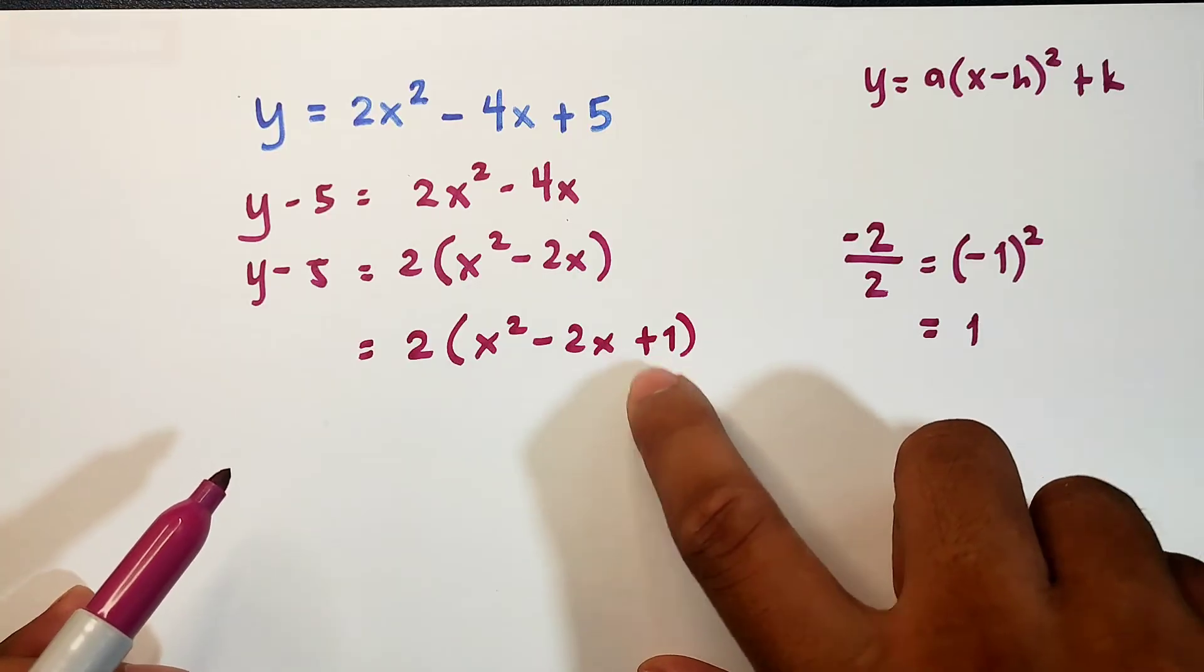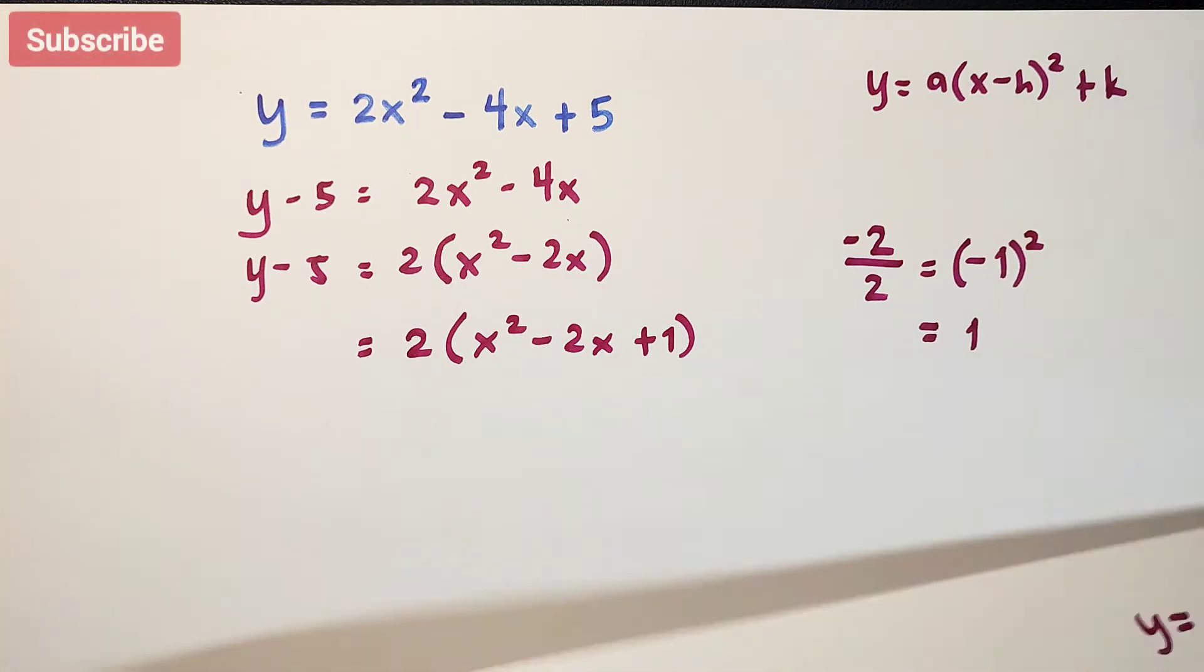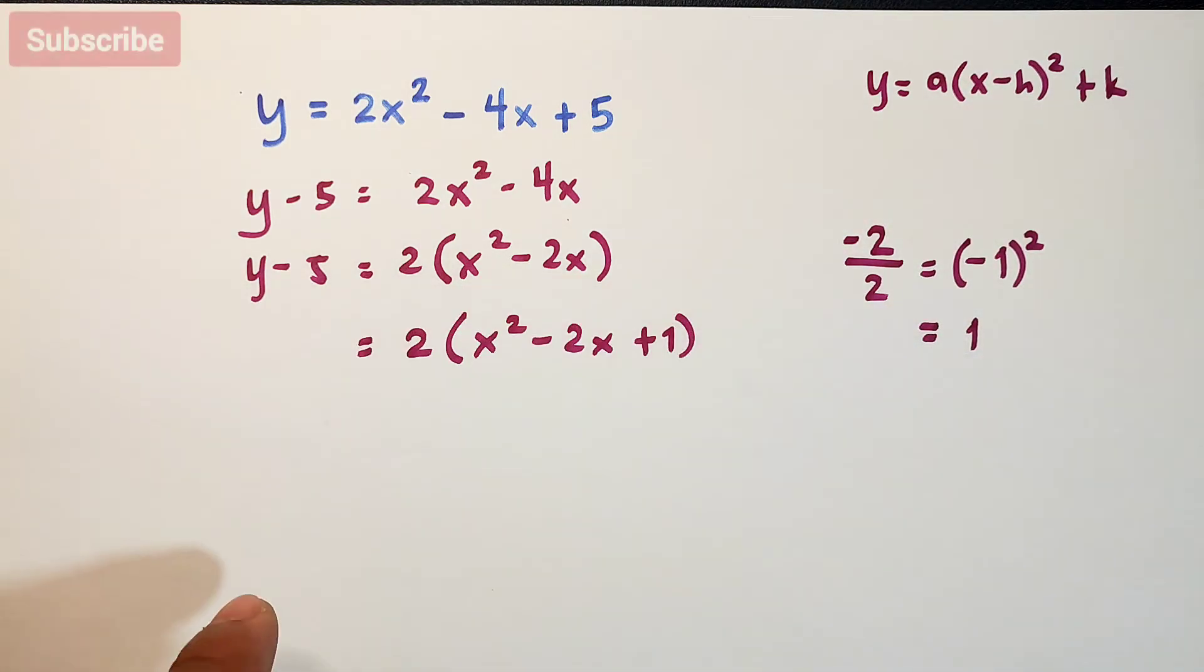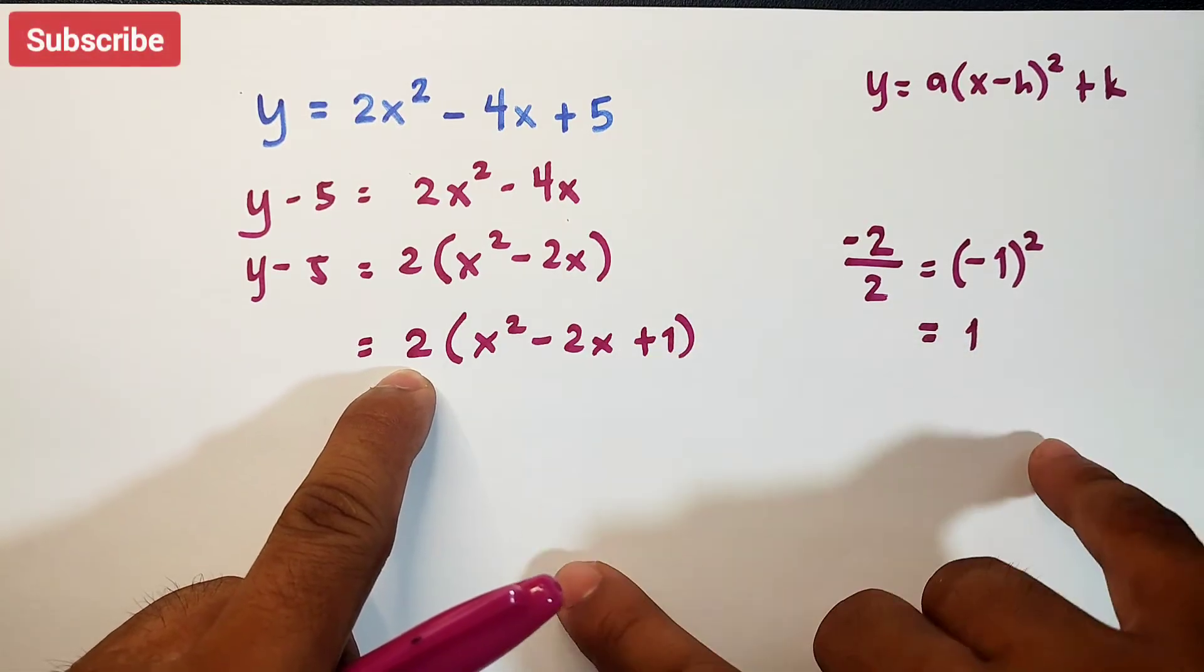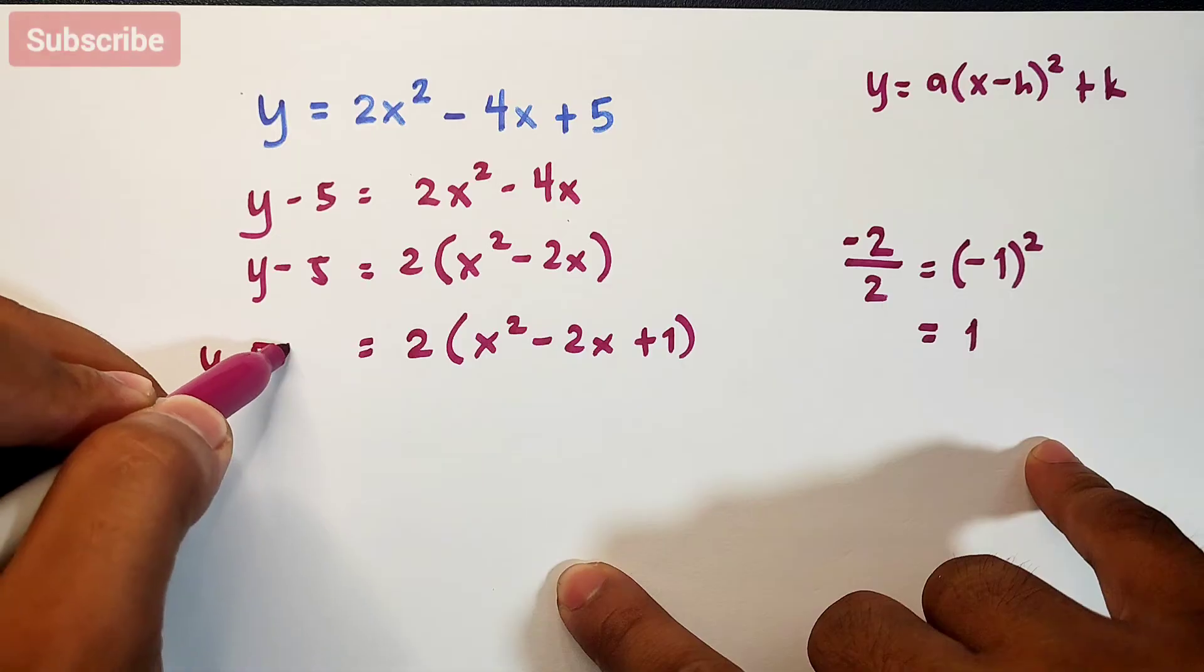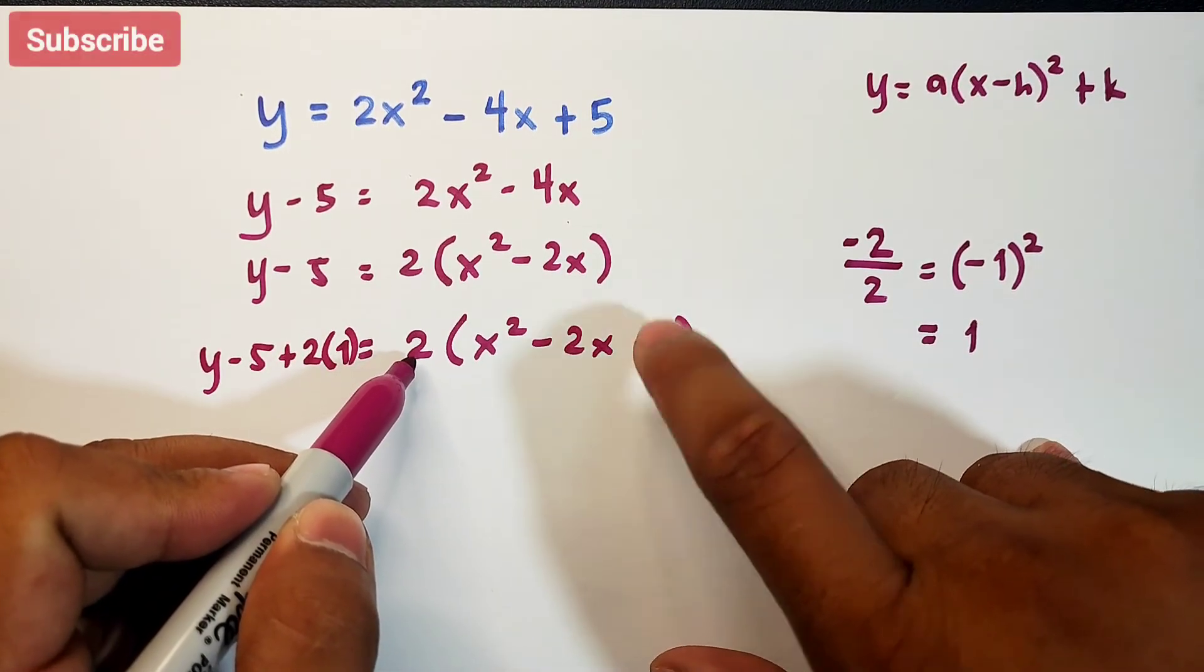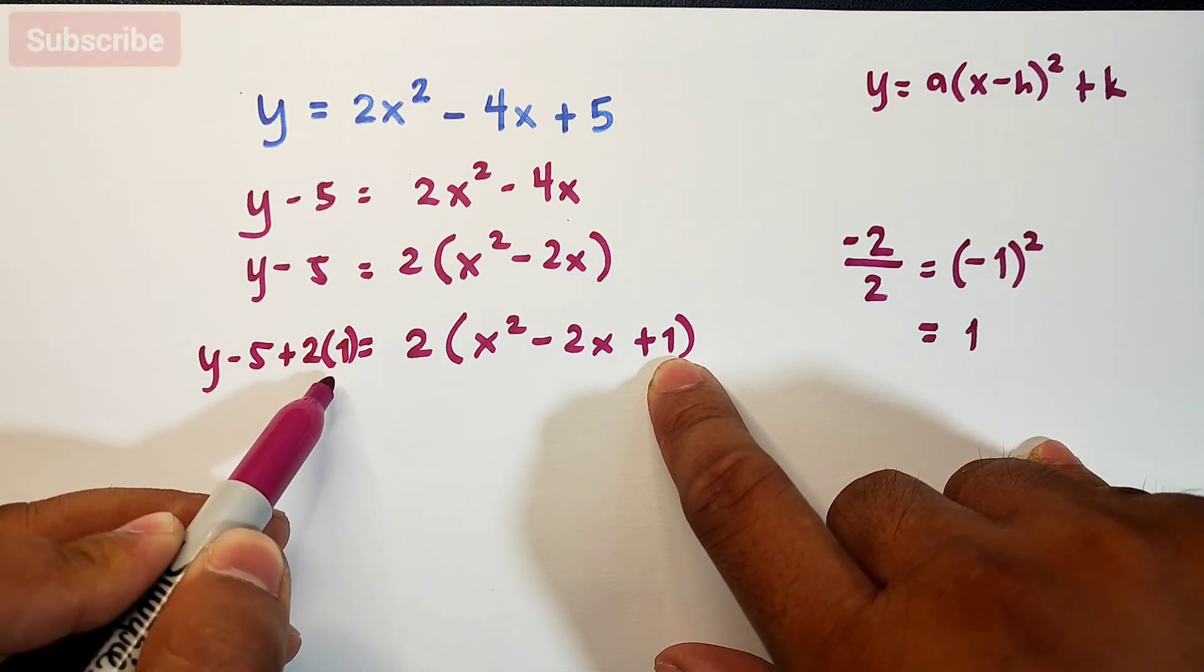We will write the constant 1 here inside. You have 2 times x squared minus 2x plus 1. This is quite different. We won't just add 1 here. We add 1 but multiply by 2, so it becomes y minus 5 plus 2 times 1, because we have a coefficient outside. The reason is to make them equal. If you multiply it by 2, it becomes 2, so we need to copy 2 times 1.